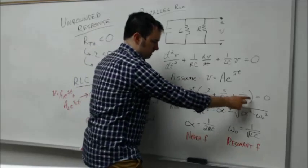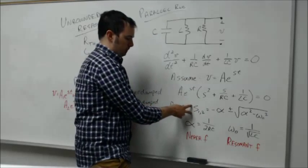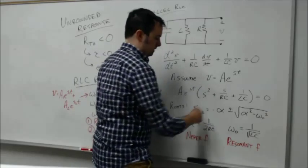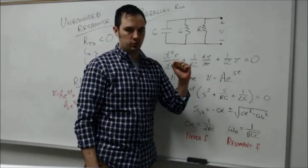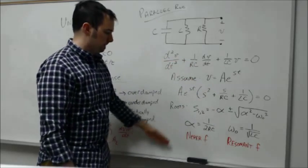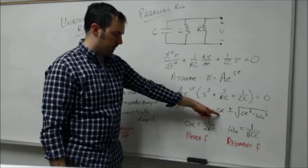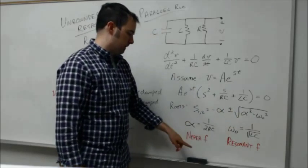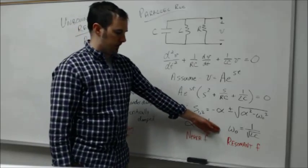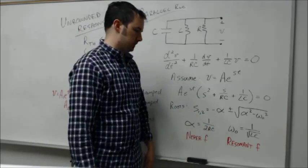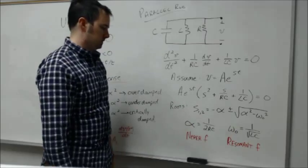We work out the roots for this specific relationship and come up with something of the form as shown here. The roots are minus alpha plus or minus the root of alpha squared minus omega naught squared. We define what this alpha and omega naught term are: the neper frequency, one over 2RC, and the omega is the resonant radian frequency, one over the root of LC.